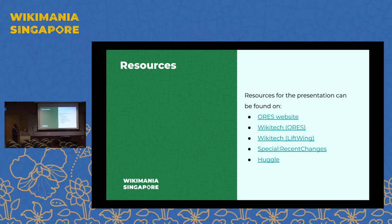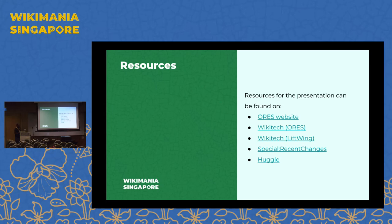To find the resources used for this session, you can visit the ORES website to go through the whole procedure and understand how this tool is serving a great purpose within the Wikimedia ecosystem. You can also visit the ORES page on Wikitech, and the same for Lift Wing. If you want to try how ORES is currently working, you can try the special page on recent changes on English Wikipedia, or if you are an administrator, you can download and install Huggle and use these tools to improve content quality.